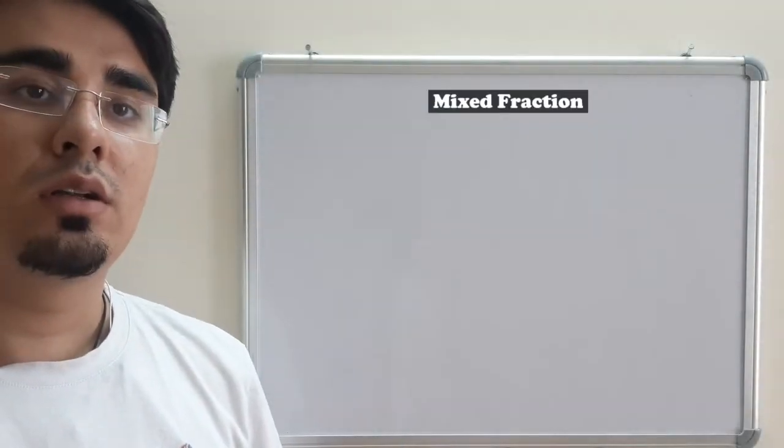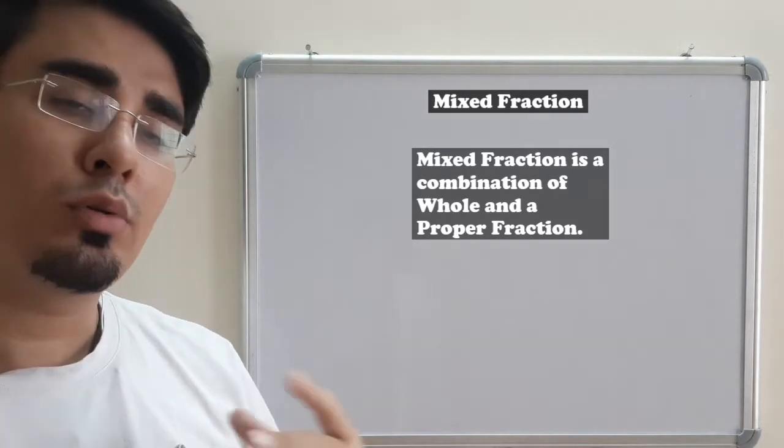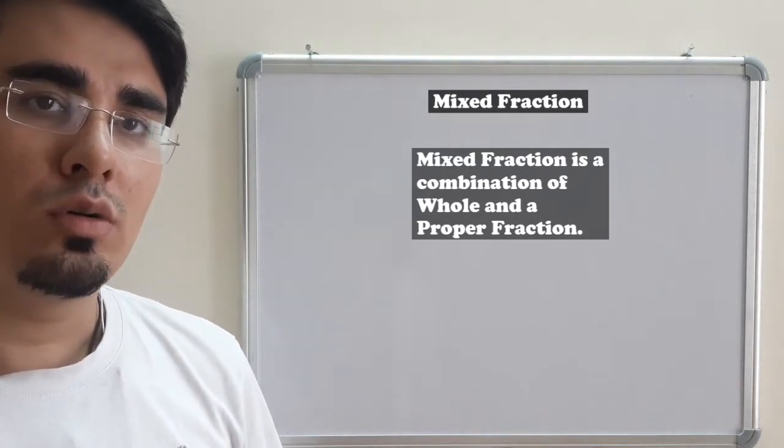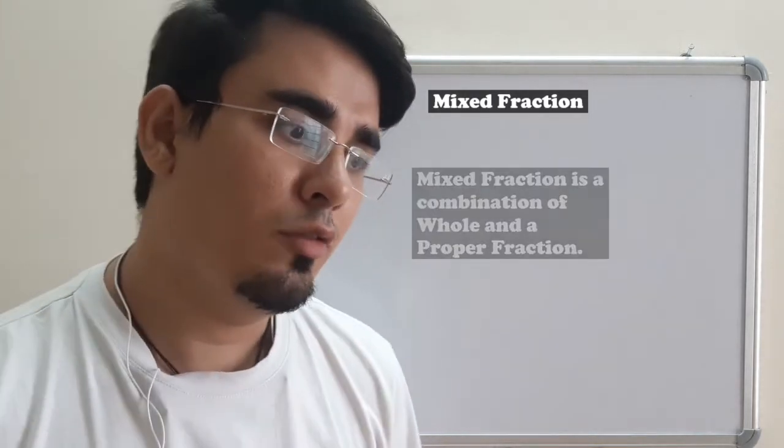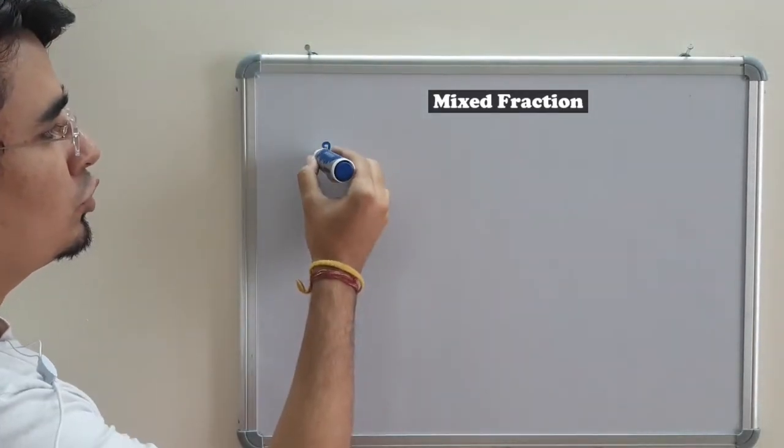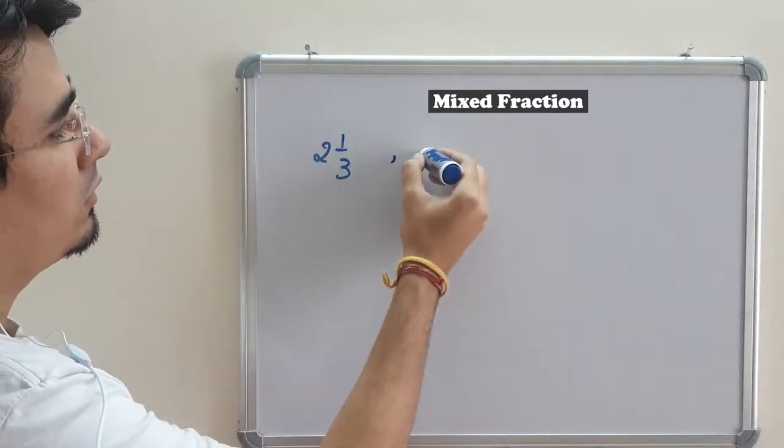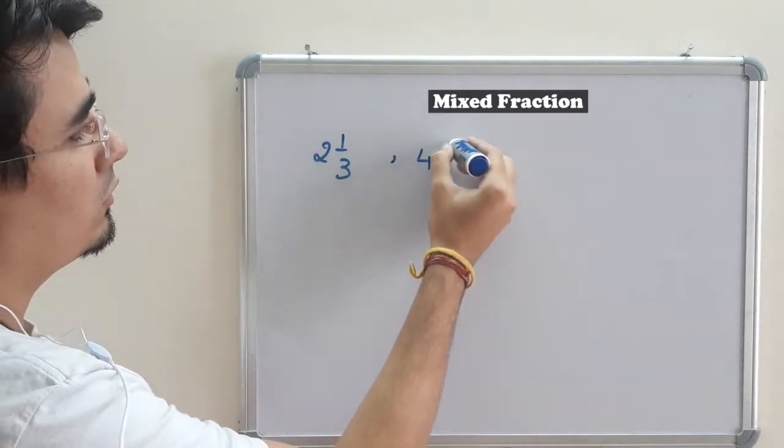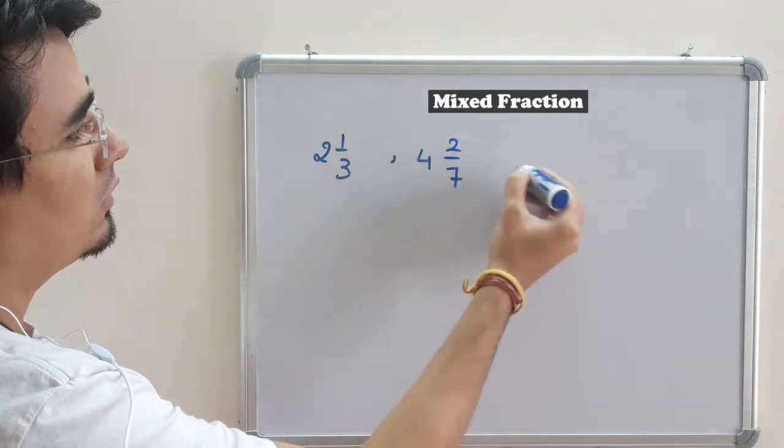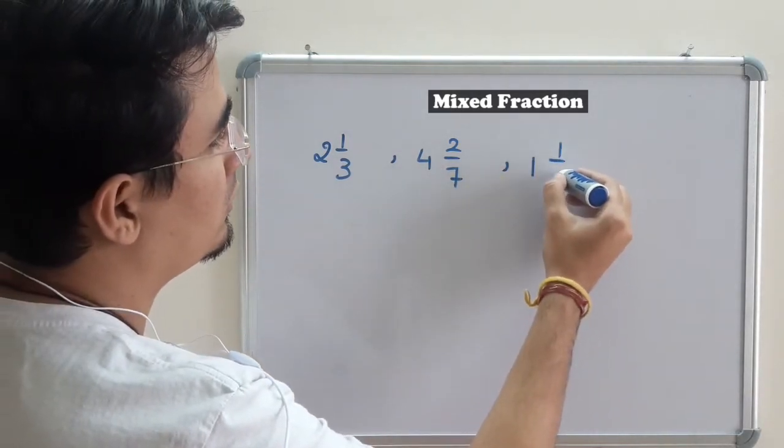Mixed fractions are a mixture of a whole and a proper fraction. Some examples of mixed fractions are 2 1/3, 4 2/7, or 1 1/3.